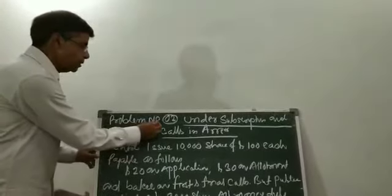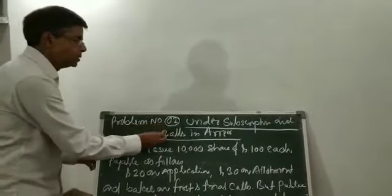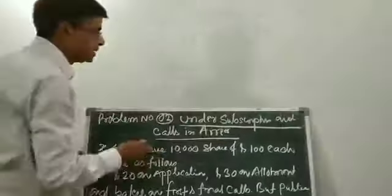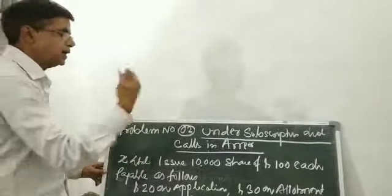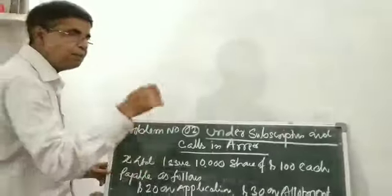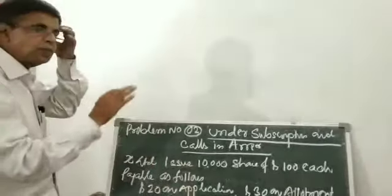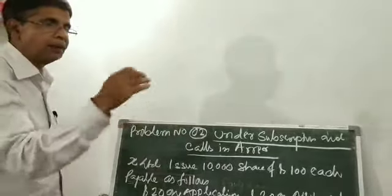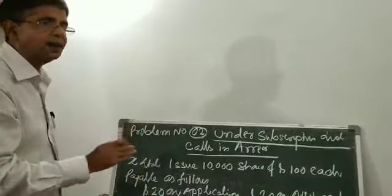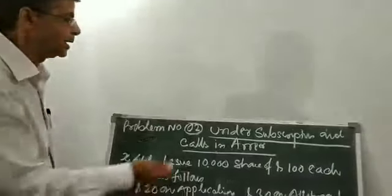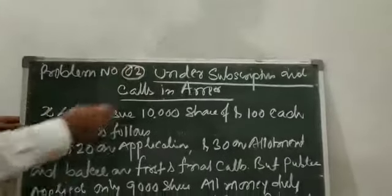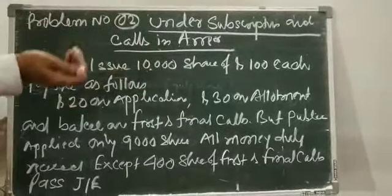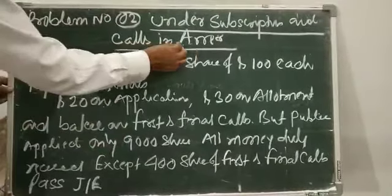Dear students, now the second problem is the issue of shares under subscription and call scenario. Under subscription happens when the company has issued 1,000,000 shares to the public but demand is only 90,000 shares. In the call scenario, the company has a first call card or a final call card.